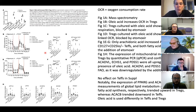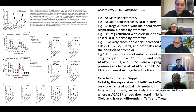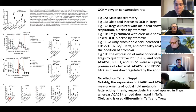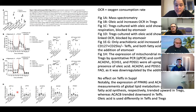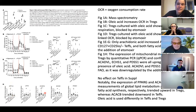They also looked at transcription of mitochondrial genes, since fatty acid oxidation requires mitochondrial gene activity. Using quantitative PCR, they found that adding oleic acid to regulatory T cells upregulated mitochondrial genes, especially CPT1A and UCBL. This effect could be reversed by etomoxir, a molecule that counteracts fatty acid oxidation.